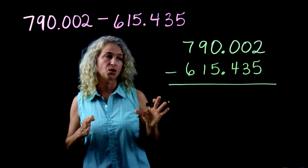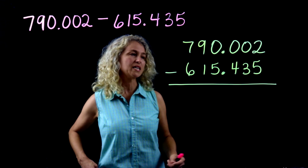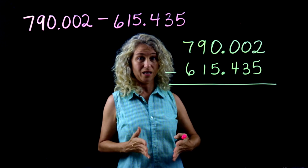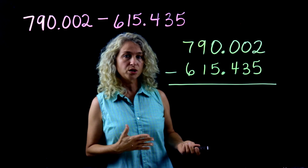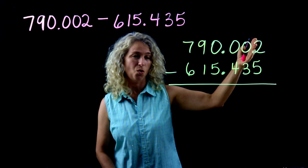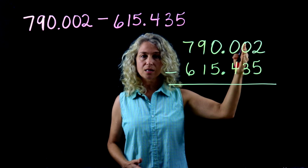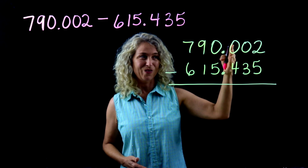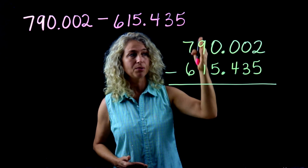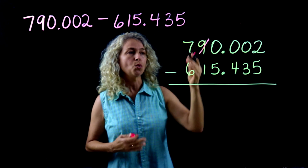It's critical to write it correctly with decimals lined up. Now we can subtract. We're taking five away from two, and we can't take a bigger number from a smaller number. You can't borrow next door, and you can't borrow the next door after that either, so you've got to go all the way over to your tens place to borrow.